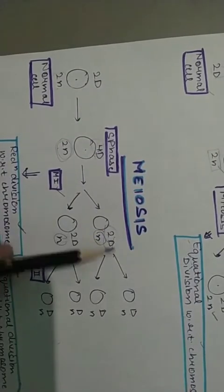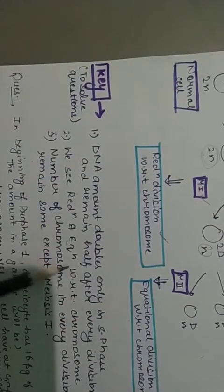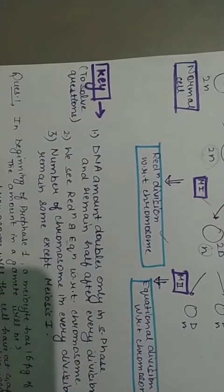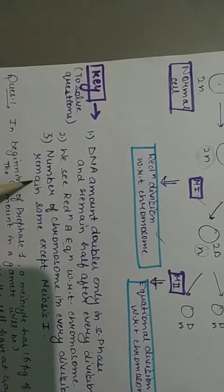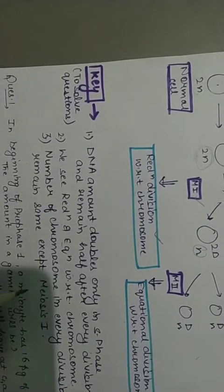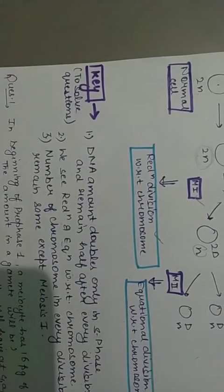We see reduction and equational division with respect to chromosome. Hum chromosome ke with respect dekhte hai ki jo division hai woh equational hui hai ya phir reductional hui hai. Number of chromosome in every division remain same except meiosis 1.